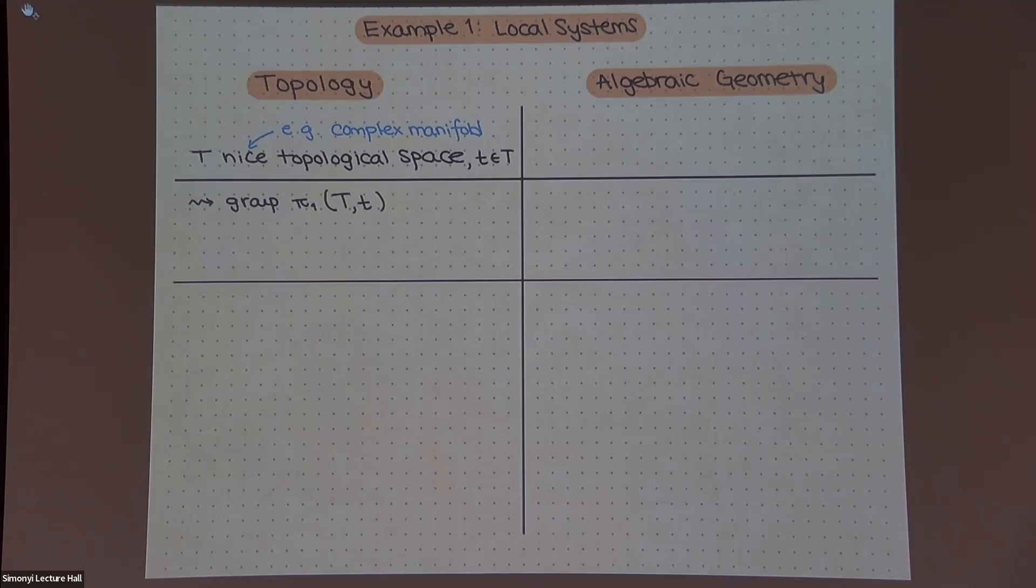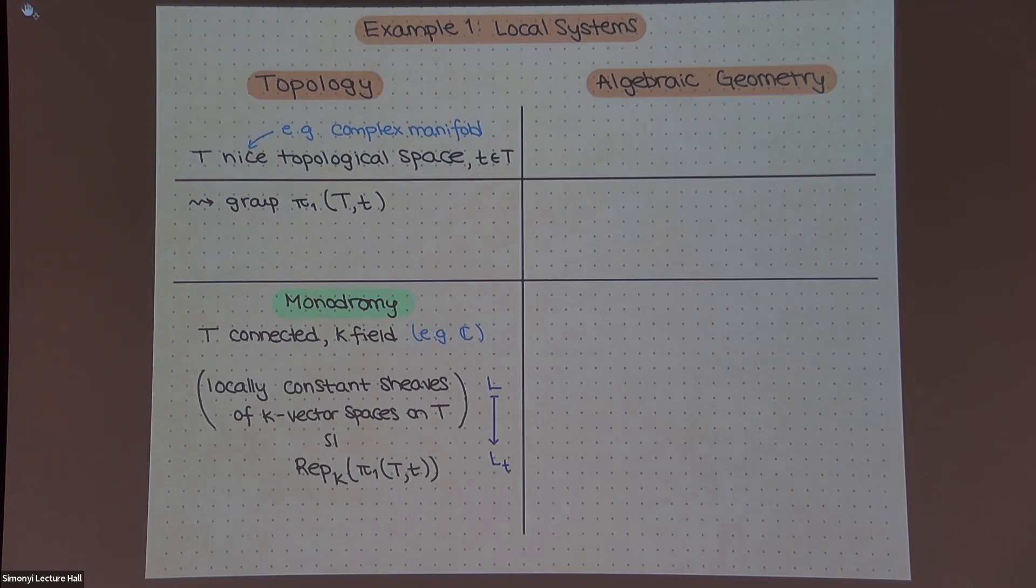And there's a nice invariant of this called the fundamental group. And this invariant has this wonderful property that is often referred to as monodromy that it classifies local systems. So locally constant sheaves of, say, vector spaces over some field are the same things as representations of this π₁.